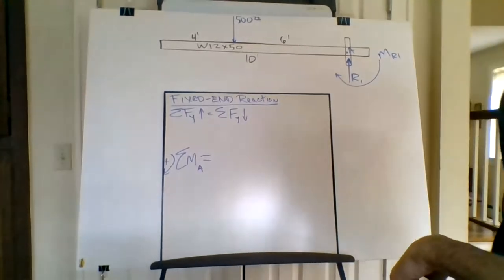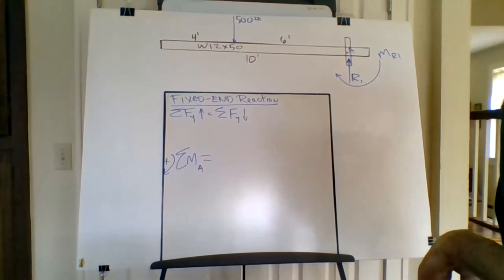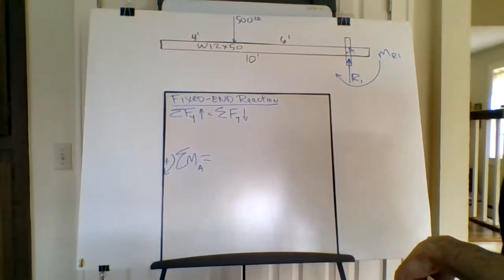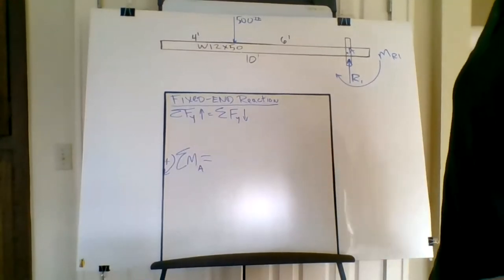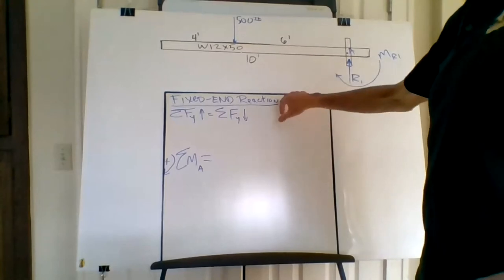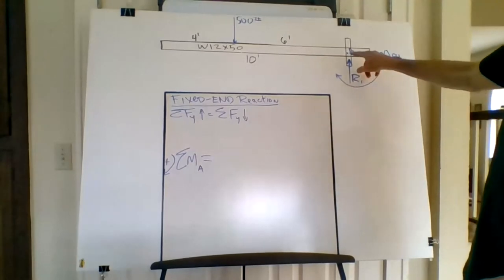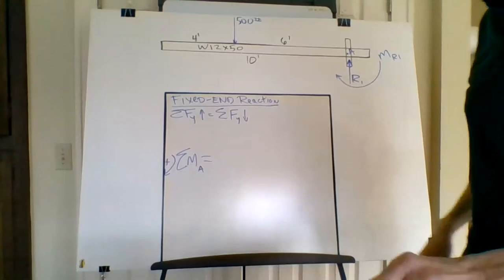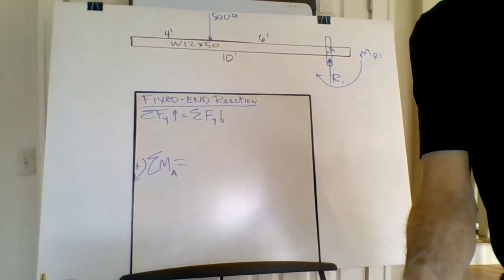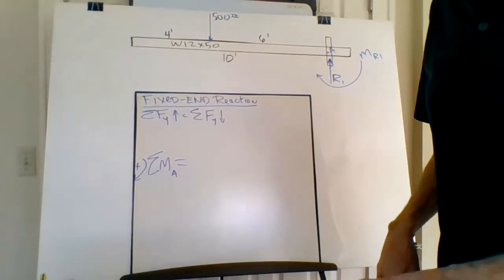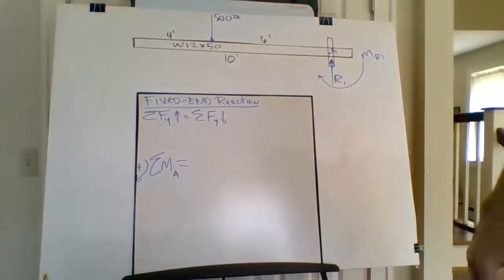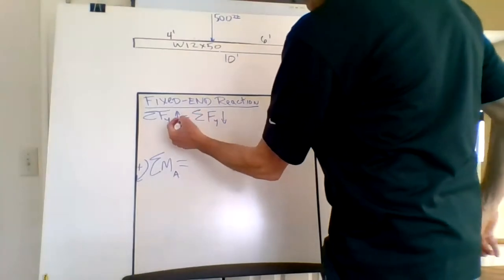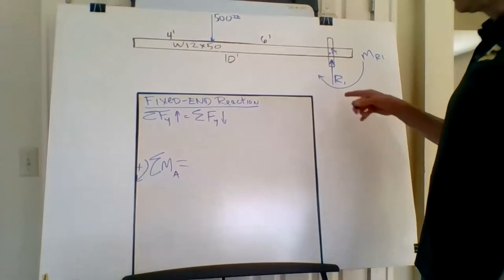What data is critical to do our stress calcs from the shear moment diagram? V_max — maximum shear — and maximum moment. This is a fixed end reaction, and the way we get reaction R1 — we're going to call this point A. The way you get the reactions is: sum of forces up equals sum of forces down.